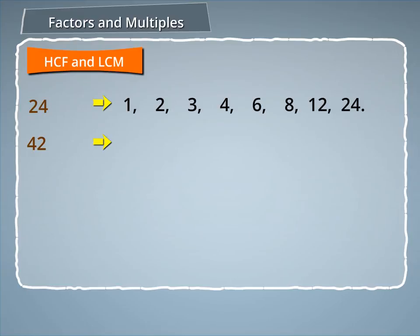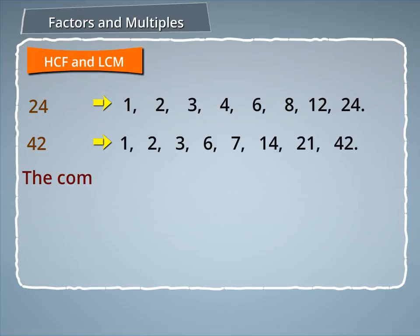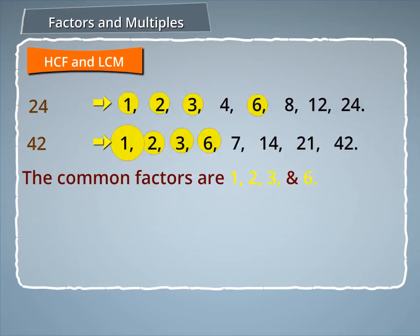On the other hand, the factors of 42 are 1, 2, 3, 6, 7, 14, 21, and 42. The common factors of 24 and 42 are 1, 2, 3, and 6.